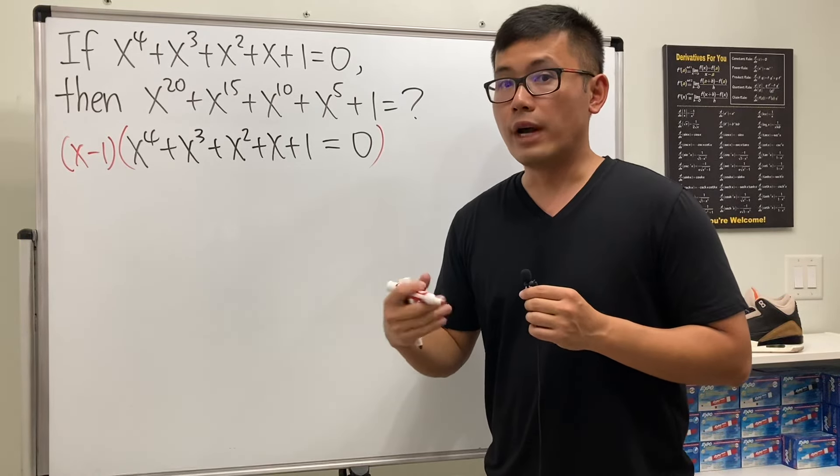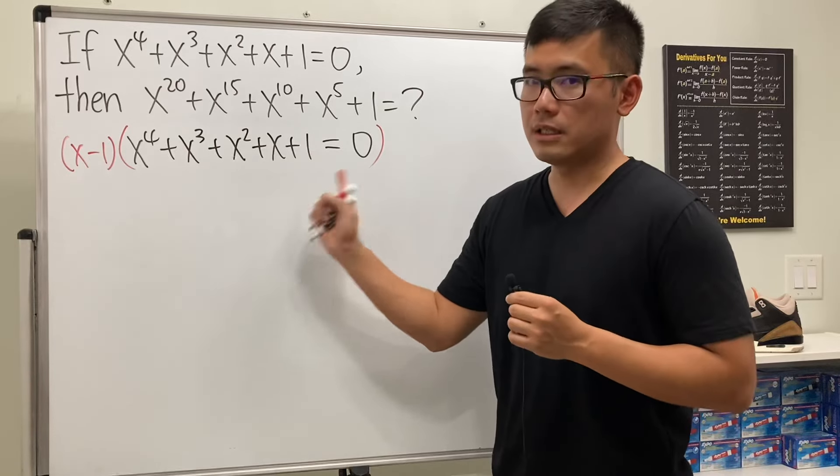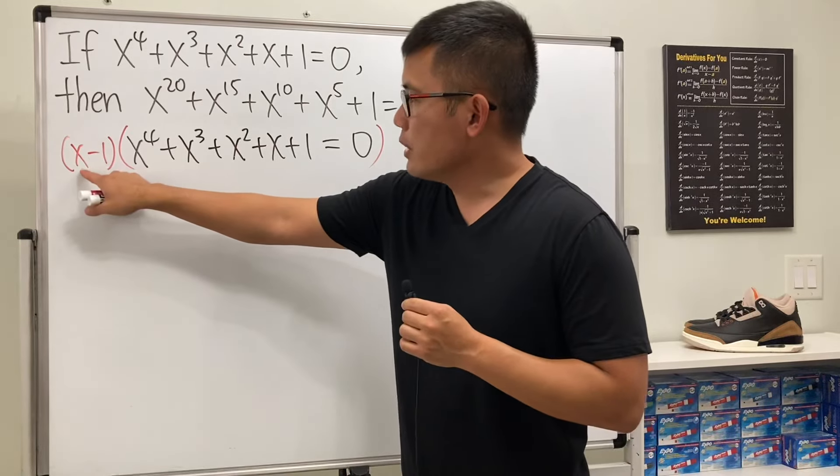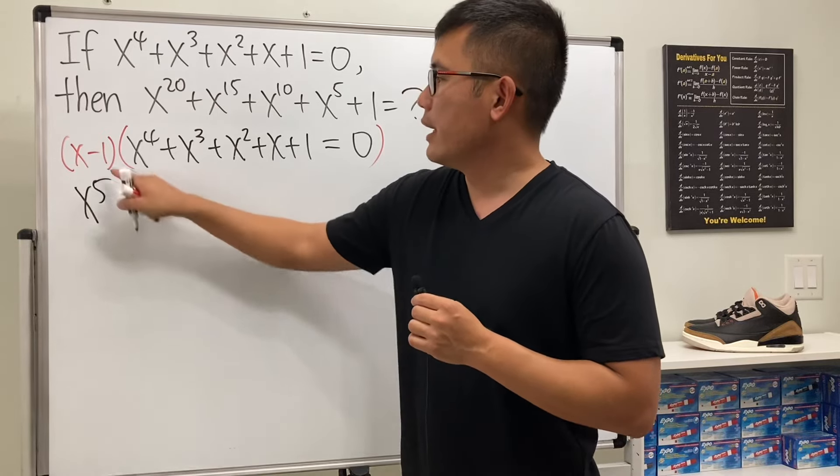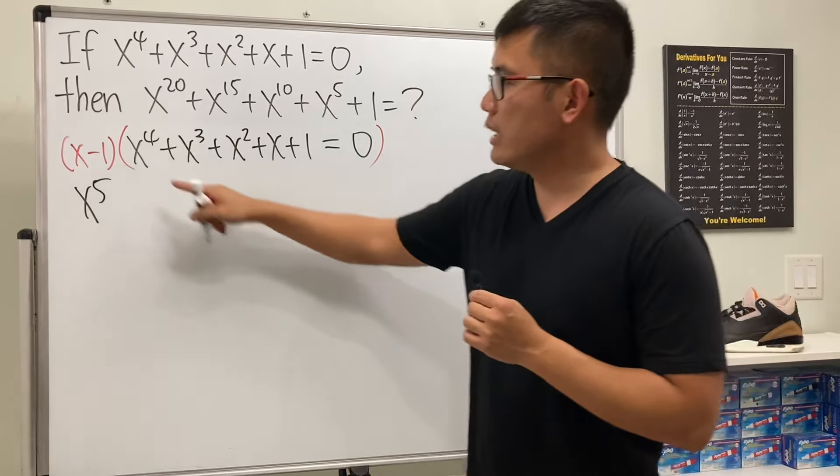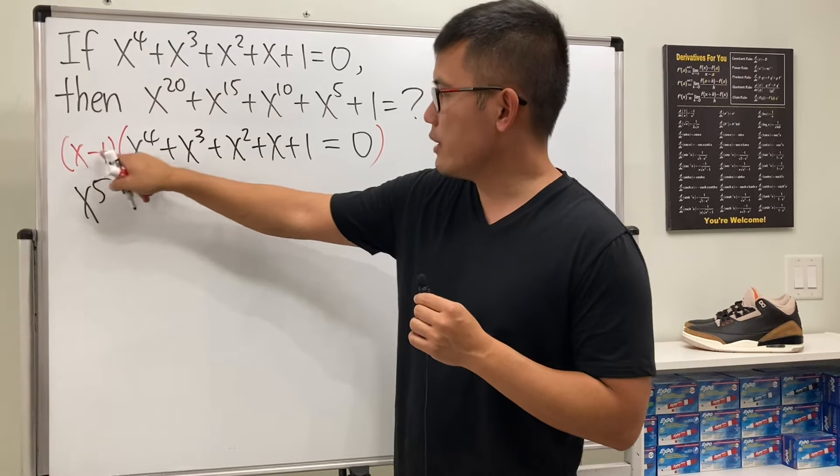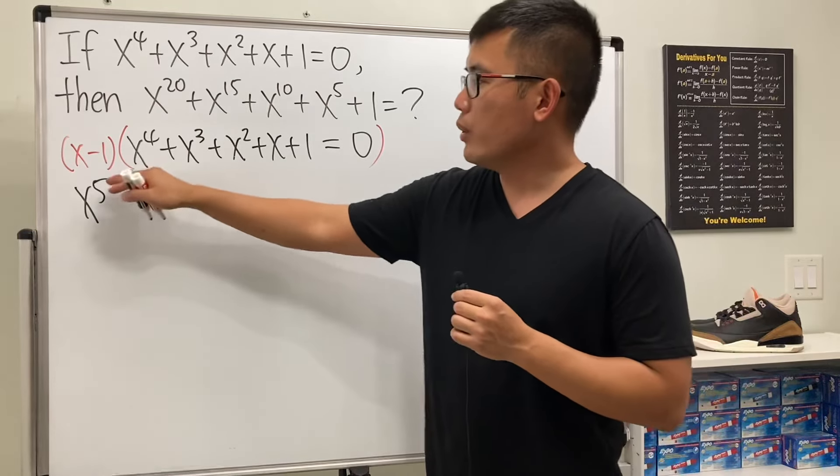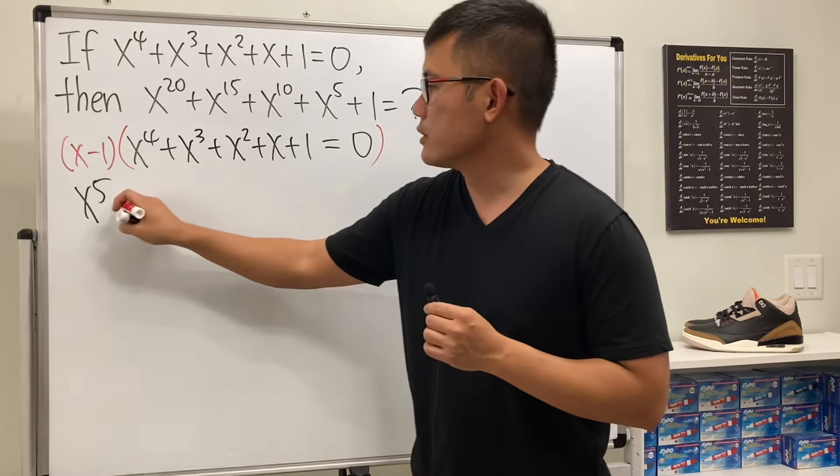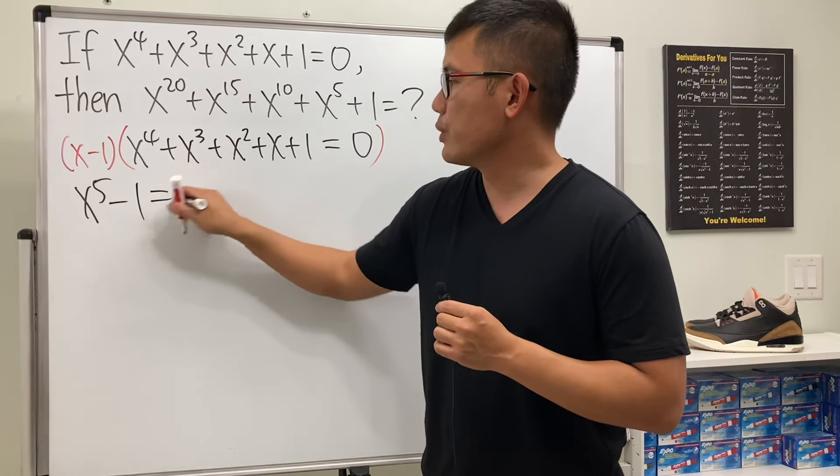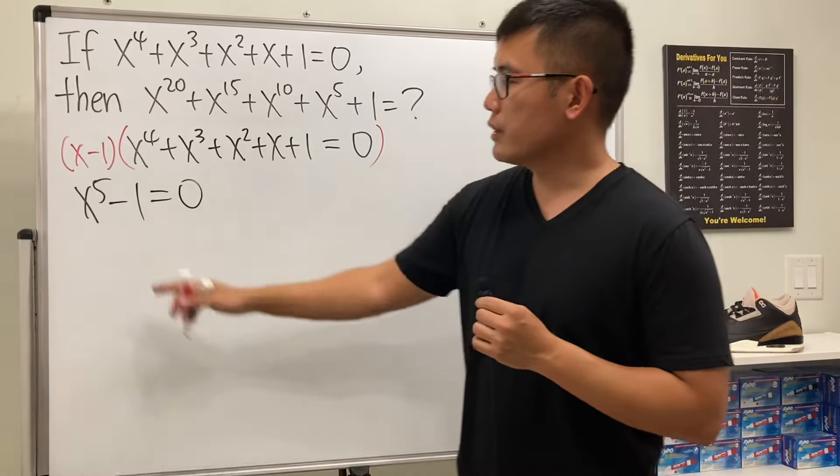By doing so, we can actually figure out the value for x^5 based on this equation. If you multiply x with all that, the first term you get is x^5, then you have all the middle terms. When you distribute negative one to this, all the middle terms will cancel, but you also have negative one times one, so that's minus one here, and that equals zero.